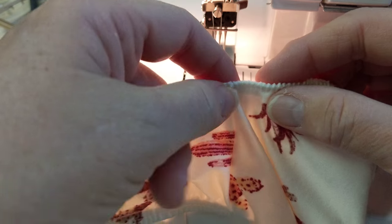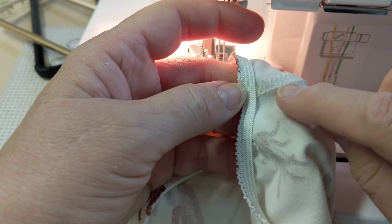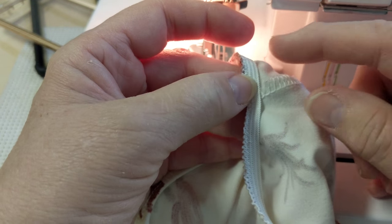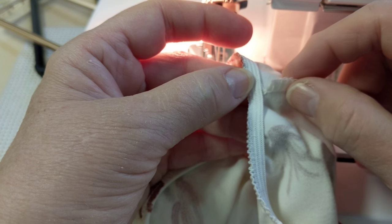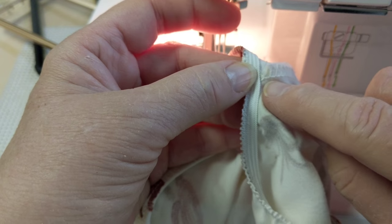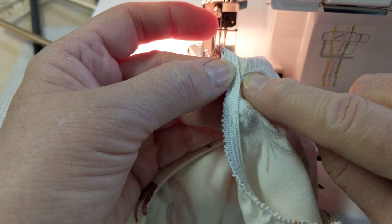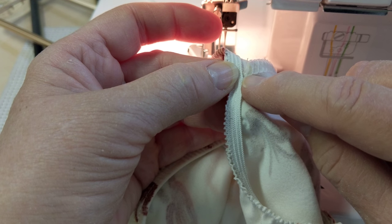So what she did is on your serged seam, right along the elastic here, you clip your serged seam, but you don't want to go through this last row of stitching because if you do, you're going to have a hole. So just go right above it.